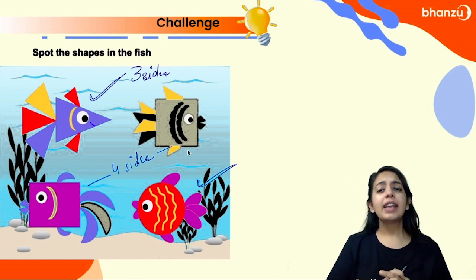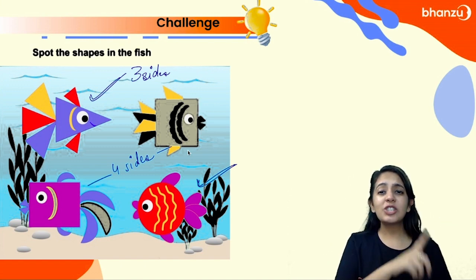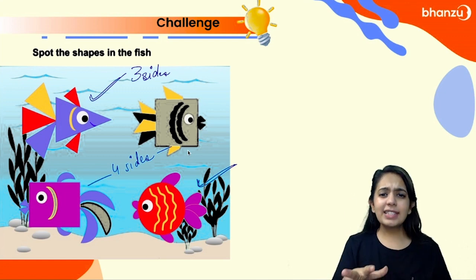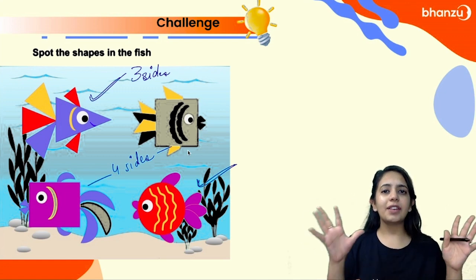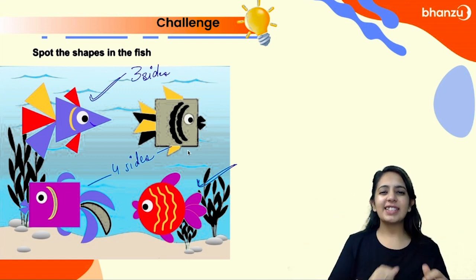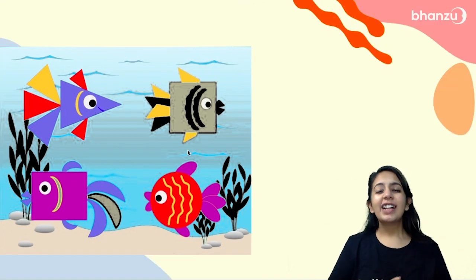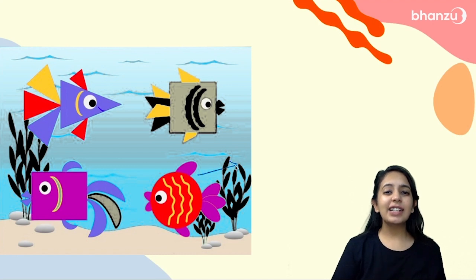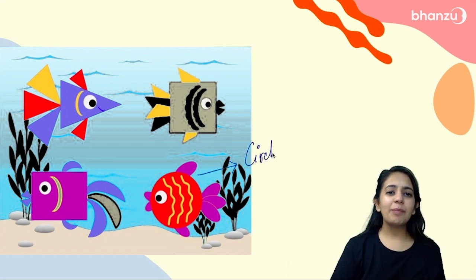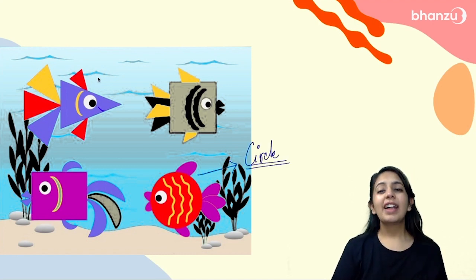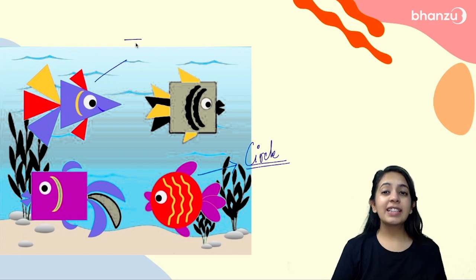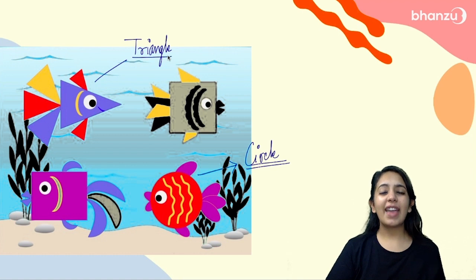Now can you spot the shapes in these fishes? Let's start with the red one. The red fish is circular in shape, therefore the shape is a circle. The blue one has three sides — 'tri' means three — therefore the name of this shape is a triangle.